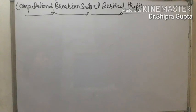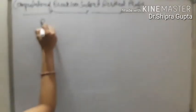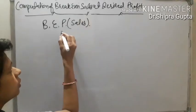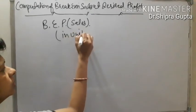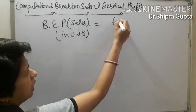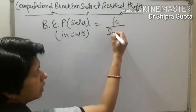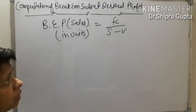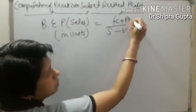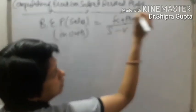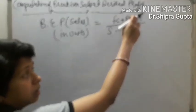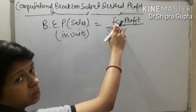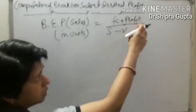We have earlier studied that the break-even point formula in terms of units is: Fixed Cost (FC) divided by (Sales minus Variable Cost). But if profit is given in the question, we will add it to the fixed cost. This condition applies when profit is given as a lump sum amount, because fixed cost always comes as a lump sum amount.